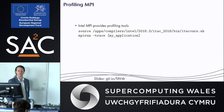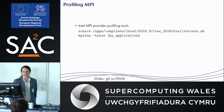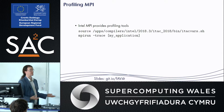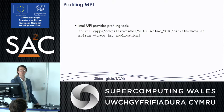Intel have provided some profiling tools that are installed on the Sunbird cluster for you to use. To do this you need to source a variable script to update your environment, and then with MPI run — which is how you run an MPI application — you just add the argument '--trace' and it traces the MPI calls for you.